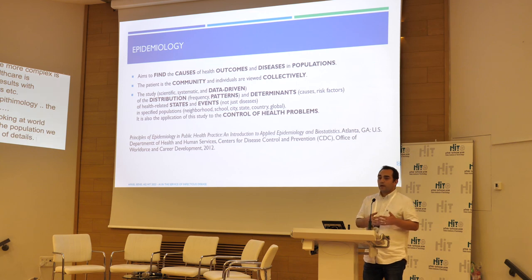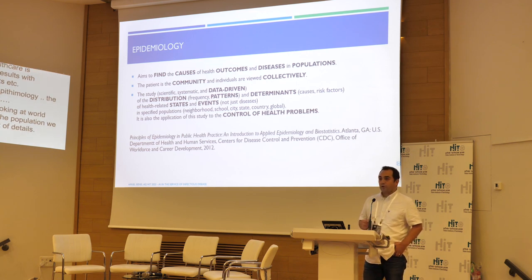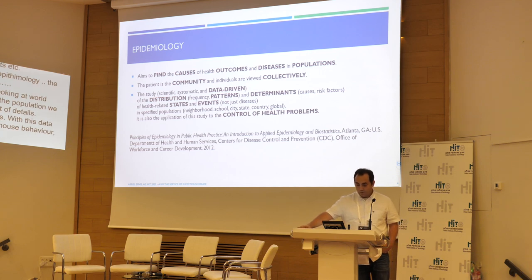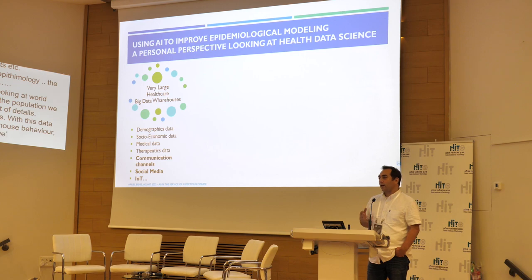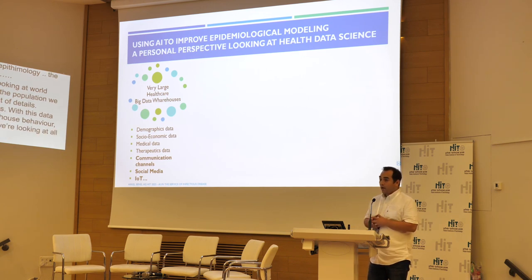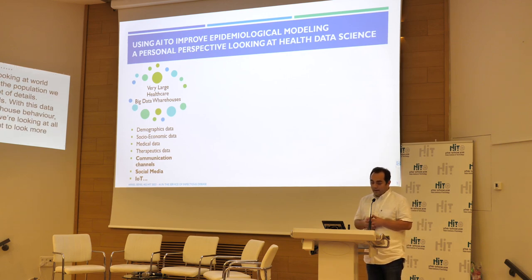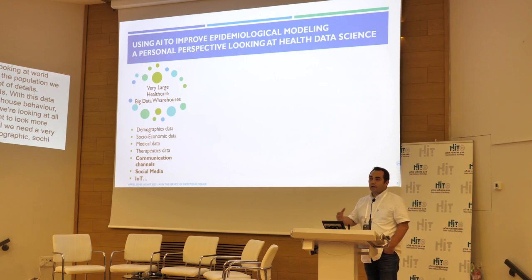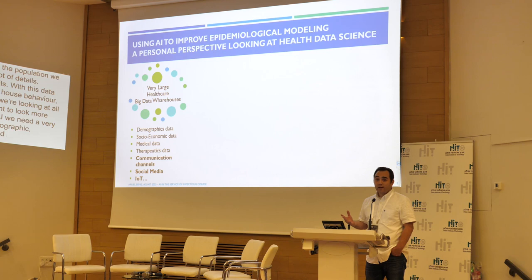For looking at the population we need data — sociodemographic, biological, and healthcare details — and with this data we are able to define trends of health behavior and social behaviors influencing health. When we want to look at health data science as a part of AI, we need a very large amount of demographic, socioeconomic, and medical and biological data.